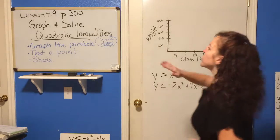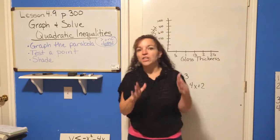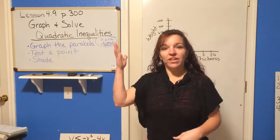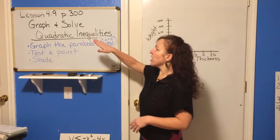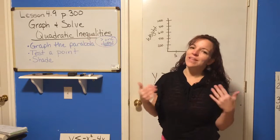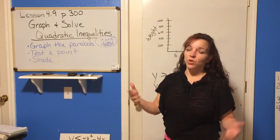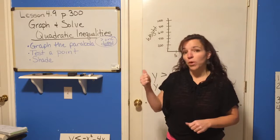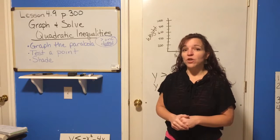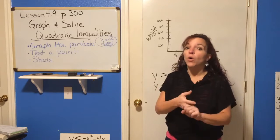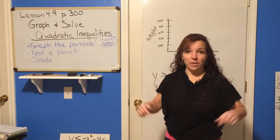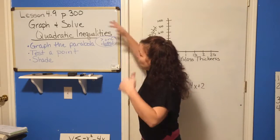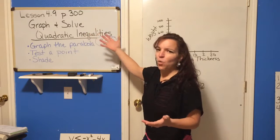In section 9 of chapter 4, we're going to graph and solve quadratic inequalities. Just like when we graphed linear inequalities you needed to know how to graph linear equations first, the same is true here. In order to graph quadratic inequalities you really need to have a handle on graphing quadratic equations. If you don't, make sure you review back to sections 4.1 and 4.2 — graphing in standard form, vertex form, or intercept form.